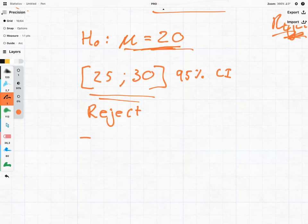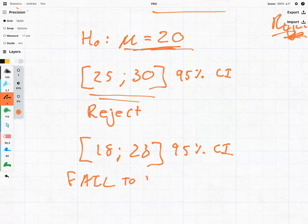But if the confidence interval was say 18 to 23 with a 95% confidence interval we now say fail to reject.